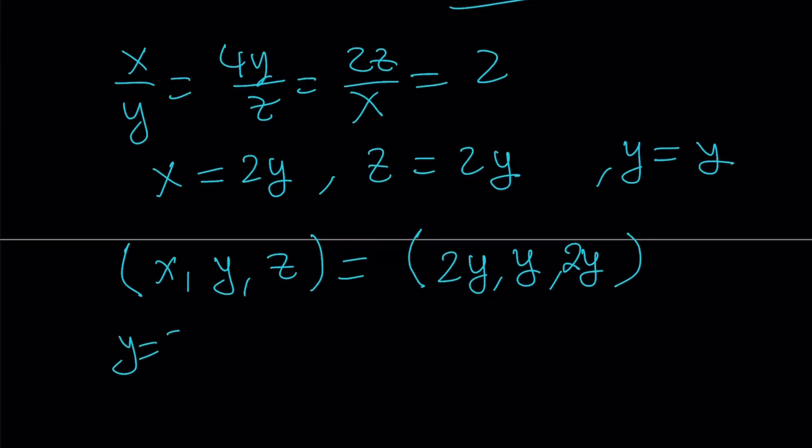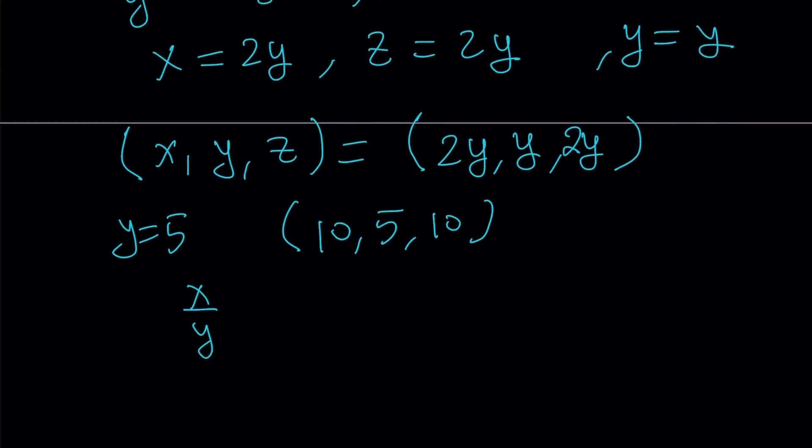What does that mean? For example, suppose y equals 5. Then if we have 10, 5, and 10, then the sum x over y plus 4y over z plus 2z over x can be written as 2 plus 2 plus 2, and that is going to be the minimum value. If you try other combinations, obviously, you're not going to get minimum value, which means you're going to get something greater than 6.